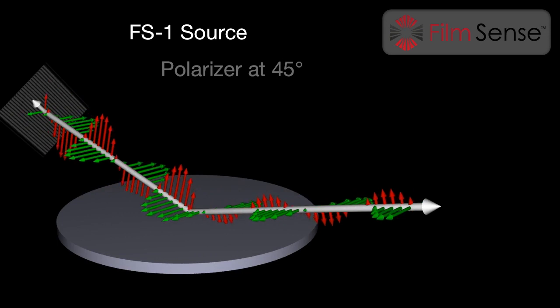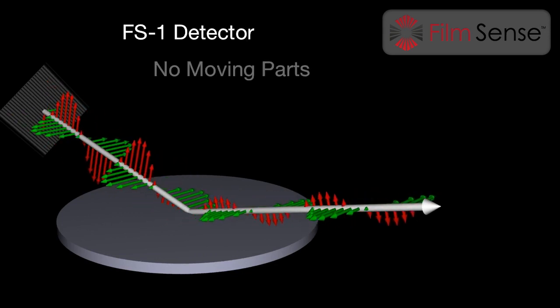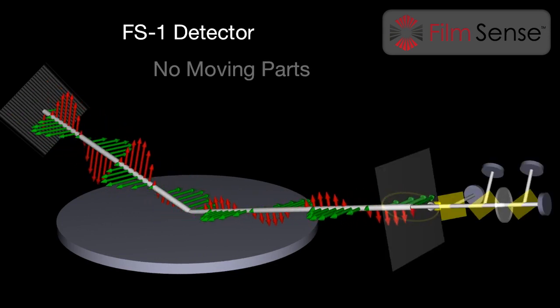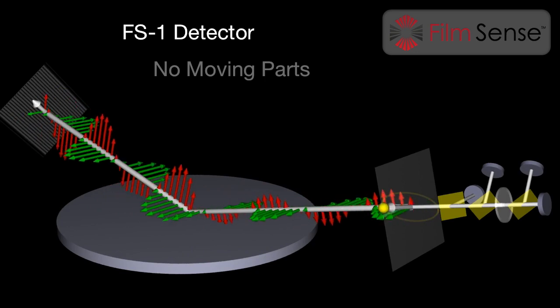The FilmSense FS1 detector unit contains a proprietary combination of beam splitters and optics, which split the beam into multiple beams and detectors, each sensitive to a different polarization component of the incoming beam. This provides fast, accurate, and reliable measurements of the ellipsometric parameters, without any moving parts.